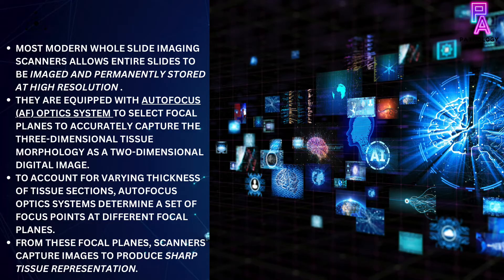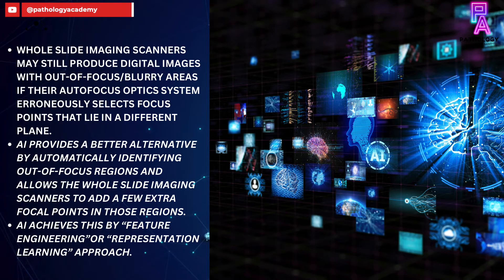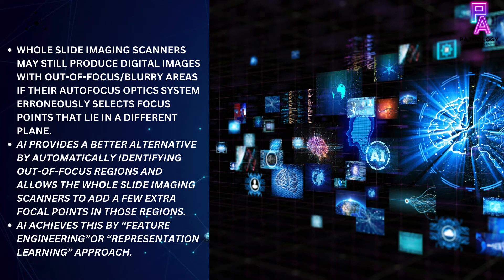To account for varying thickness of tissue sections, autofocus optics systems determine a set of focus points at different focal planes. From these focal planes, scanners capture images to produce sharp tissue representations. However, whole slide imaging scanners may still produce digital images with out-of-focus or blurry areas if their autofocus optics system erroneously selects focus points that lie in a different plane.